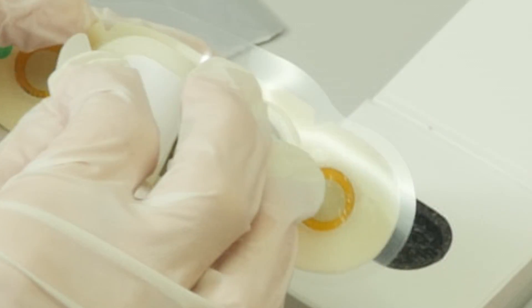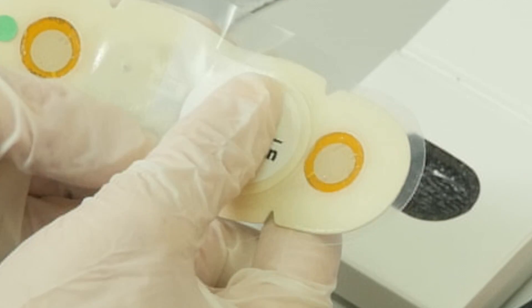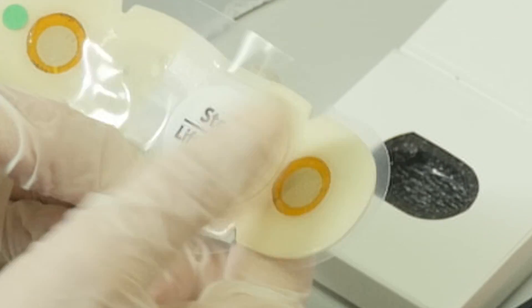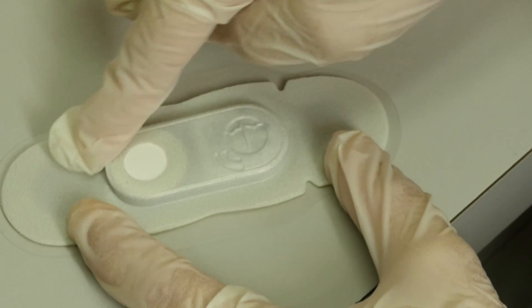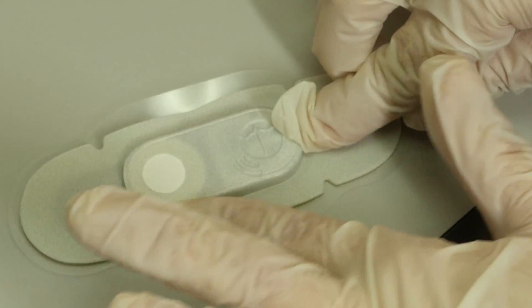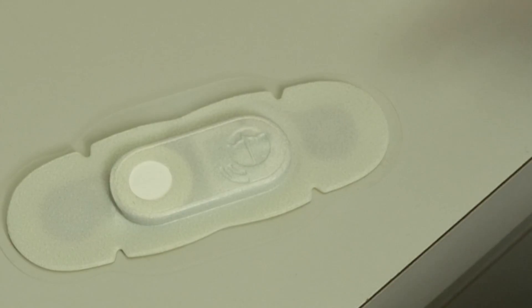Peel to remove the liner from the back flap. Turn the patch over to a smooth flat surface and press down firmly around the module cavity to ensure it is tightly sealed.